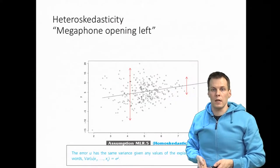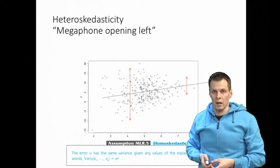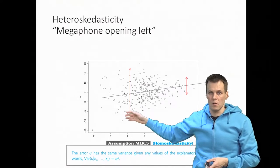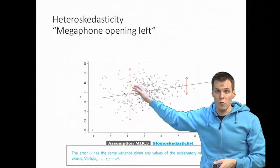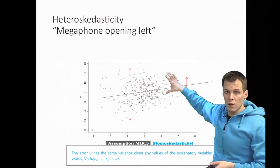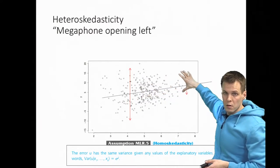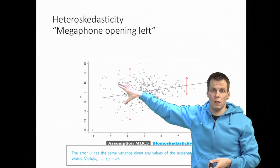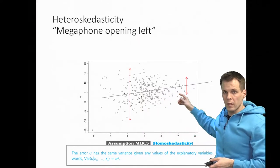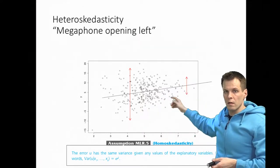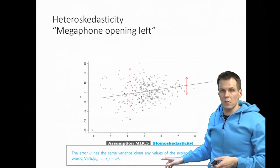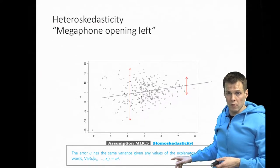In their paper, heteroscedasticity appears as a megaphone opening left shape of the residuals. The assumption is not actually about residuals but about the error term, which we don't observe. Normally we assume that observations are equally spread out on the regression line. Here we don't have that — the dispersion of the error term is a lot less on one side than the other, giving us a megaphone opening left. That is a violation of the fifth regression analysis assumption.